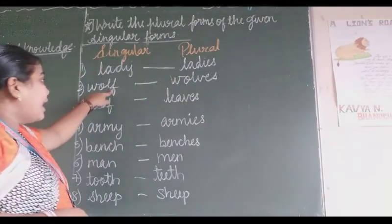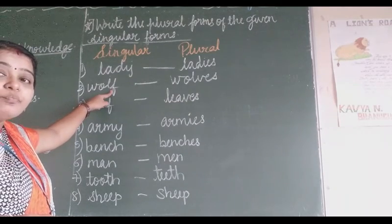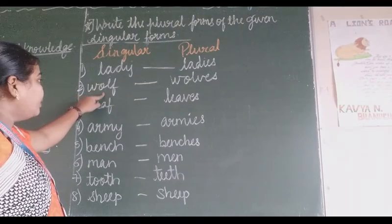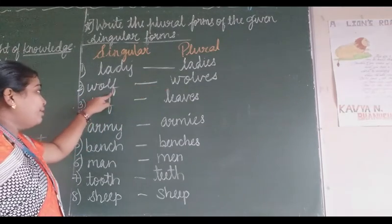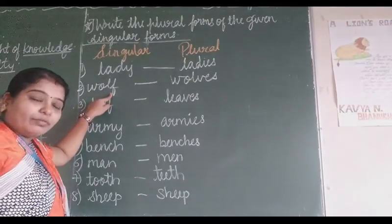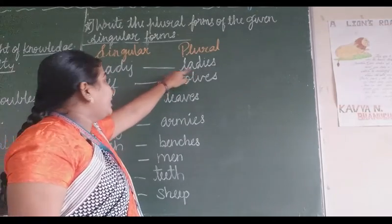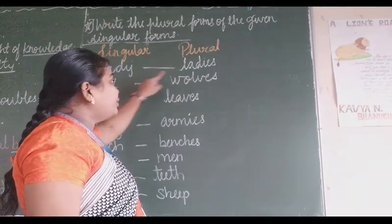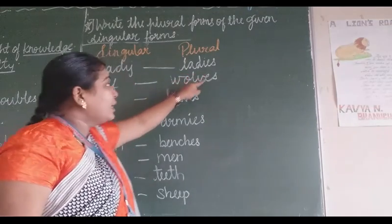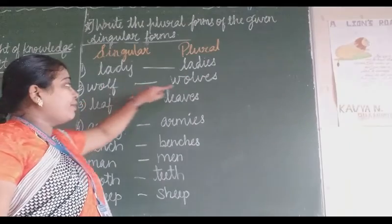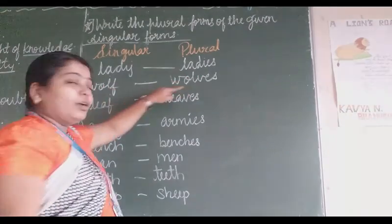Then 'wolf'. F is there. When F is there, we change the F into V-E-S. So W-O-L-F — we remove the F from the word and write V-E-S in its place, just as we did with 'lady' where we removed the Y and wrote I-E-S. In the same way, in place of F we write V-E-S. So 'wolf' becomes 'wolves'.